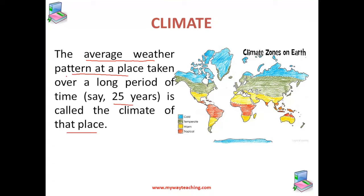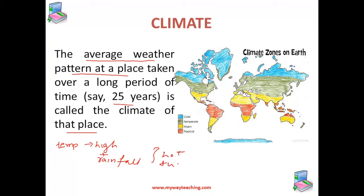For example, if the temperature at a particular place is high, we can say that the place has hot weather. And also, if it has high temperature plus rainfall on most of the days, then we can say that the climate of the place is hot and wet, or we can say hot and humid.